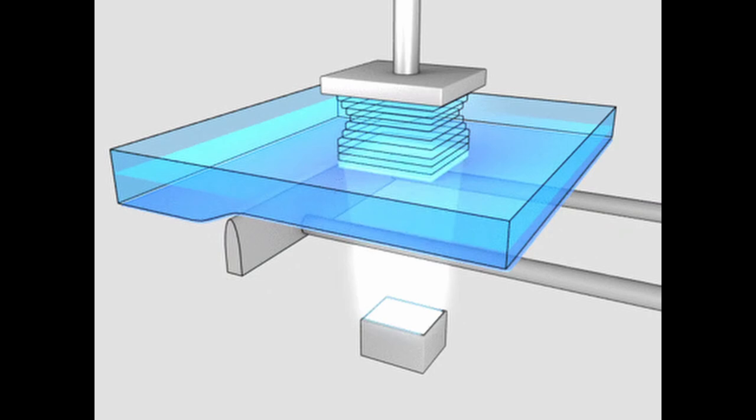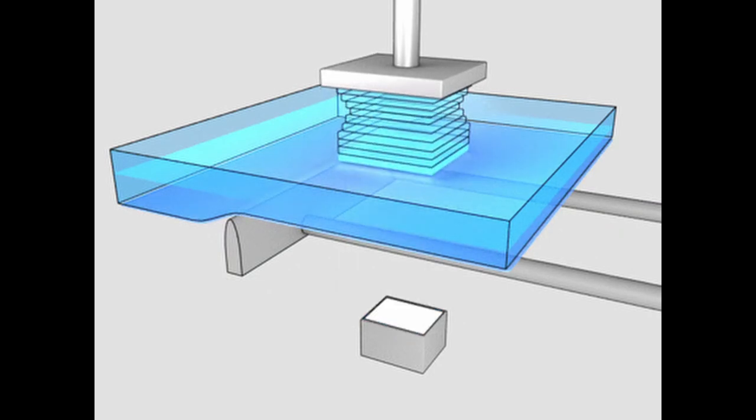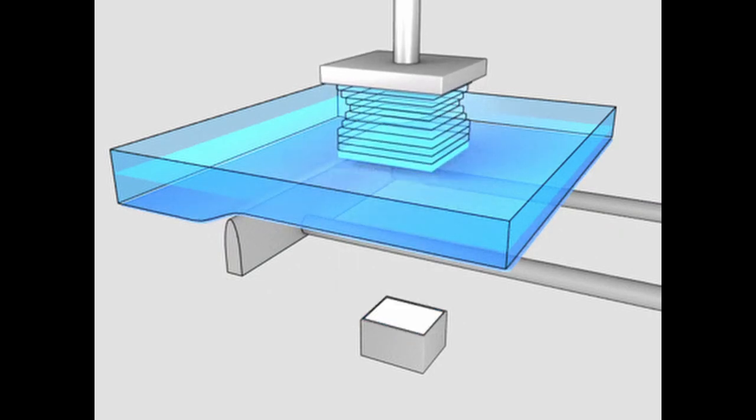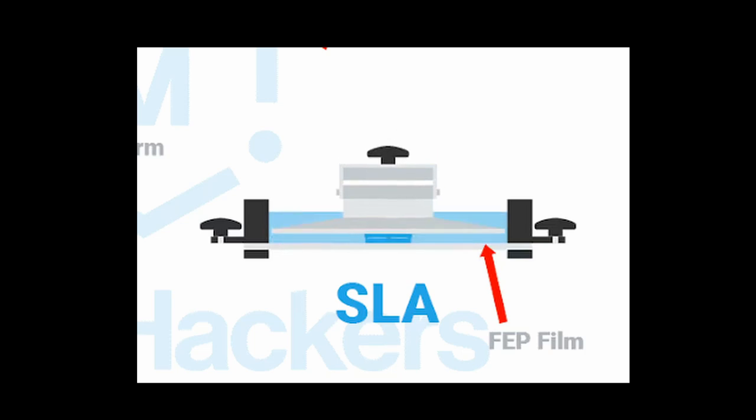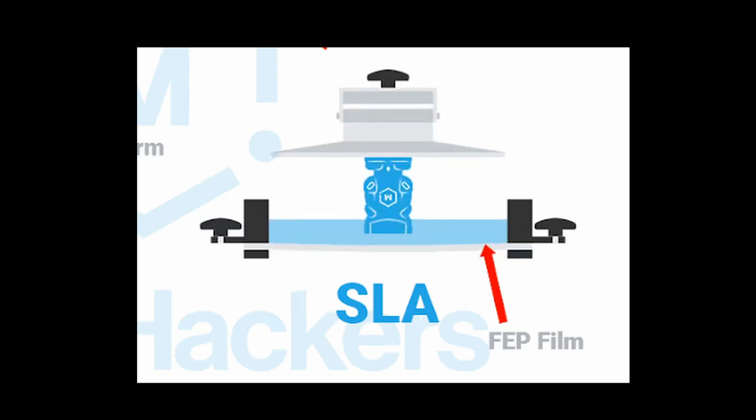When the resin wants to print a super thin layer, it lowers the bed into the tub of resin at the desired height. Then the LCD opens up to the desired shape, blocking light in certain spots, but being transparent in others. Which the UV light shines right through until it hits the liquid and solidifies it. Then the bed rises and repeats for the rest of the print.